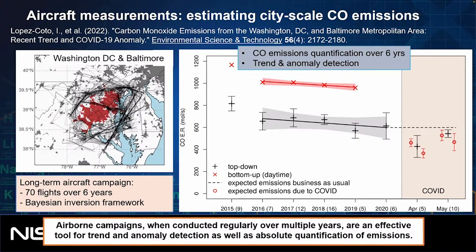Some test beds are also constrained by aircraft measurements, which we routinely make around Indianapolis and the Washington D.C. area. Using aircraft observations around Washington D.C. and Baltimore, we've been able to infer trends in whole-city emissions — for example, detecting a downward trend in carbon monoxide, which is closely related to CO₂, consistent with improving fuel efficiencies. We were also able to detect abrupt changes like the drop during the onset of behavioral changes associated with COVID-19.